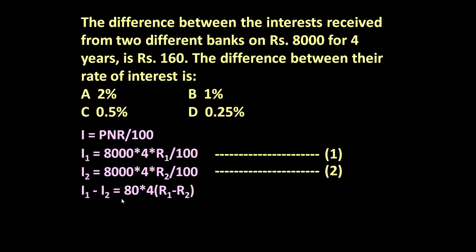I1 minus I2 becomes 80 × 4 × (R1 − R2), since 8000 divided by 100 gives 80, and 4 is common, we take it out as a factor with (R1 − R2) in brackets. It is given that I1 minus I2, the difference between the two interests, is rupees 160 for four years. So 160 = 80 × 4 × (R1 − R2), which gives 160 = 320 × (R1 − R2).